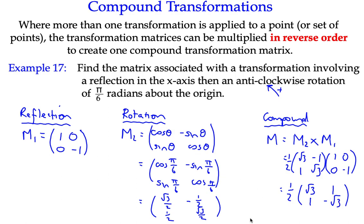So if I apply the matrix M to any point, it will reflect in the x-axis and then rotate it by π over 6 radians about the origin. There we go. I hope that's helpful. Just remember, work them all out separately and then multiply them in reverse order.